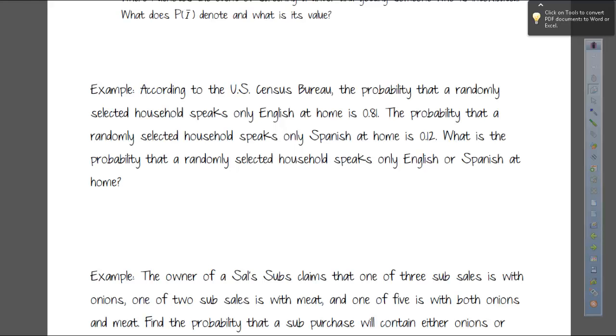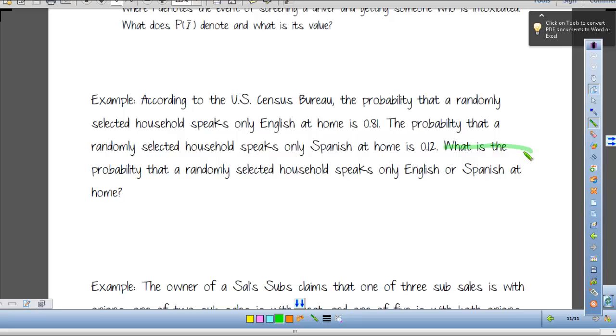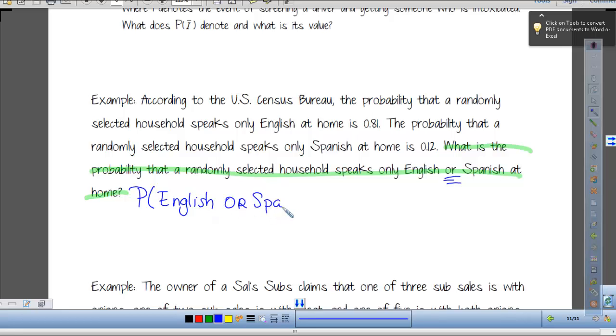Let's look at this one. According to the U.S. Census Bureau, the probability that a randomly selected household speaks only English at home is .81. The probability that a randomly selected household speaks only Spanish at home is .12. What is the probability that a randomly selected household speaks only English or Spanish at home? So here's my thinking. We're going to focus on what the problem is asking us to find, which is usually the last sentence.